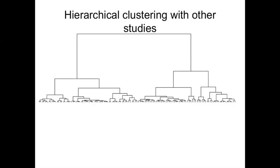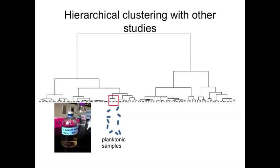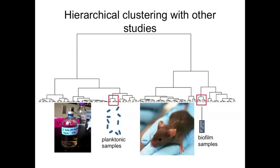Because there were so many differences between the two populations, we put our samples in context by comparing their transcriptomes with samples from other studies performed using a wide range of growth conditions. Hierarchical clustering showed that the planktonic cells clustered with other flask-grown cultures in exponential phase, as we would expect. The biofilm cells clustered with samples grown in germ-free mice.